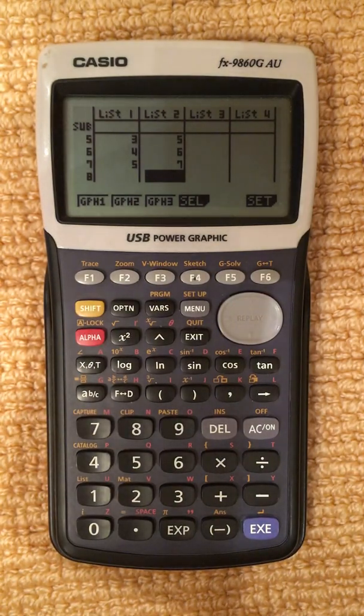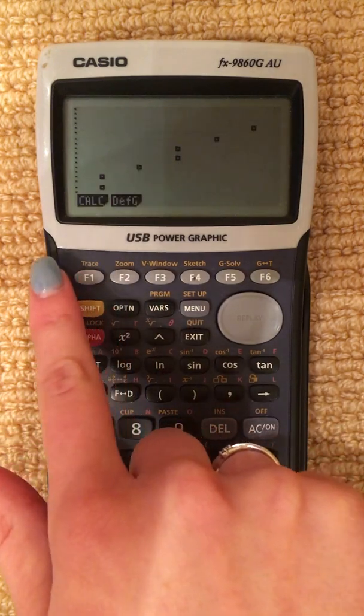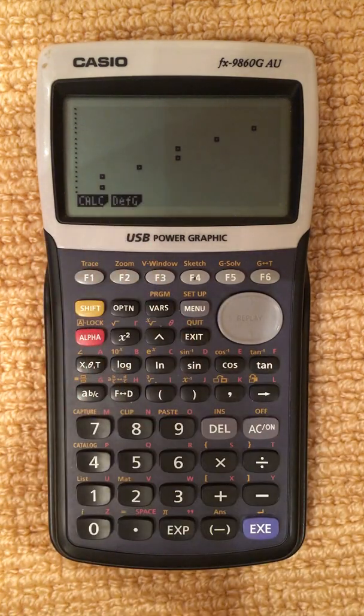At this point, we want to graph the data points. Press Graph 1. Our points are now on the Cartesian plane.